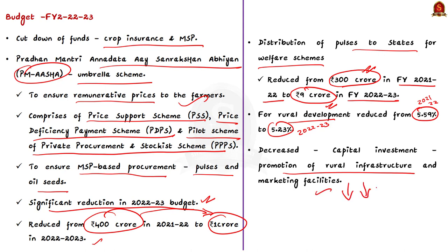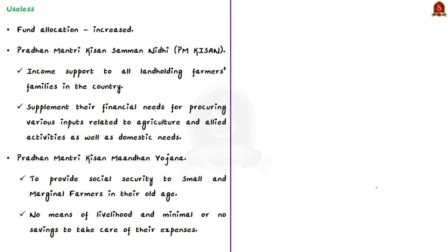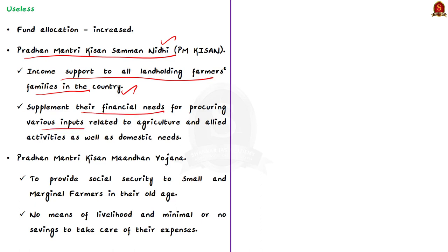The author mentions two examples where government spending will not result in long-term asset generation. Firstly, Pradhan Mantri Kisan Samman Nidhi provides income support to all land-holding farmer families in the country to supplement their financial needs for procuring various inputs related to agriculture and allied activities as well as domestic needs.